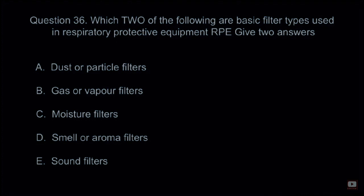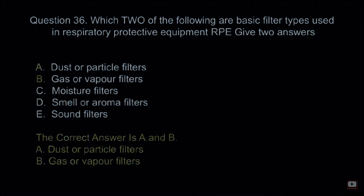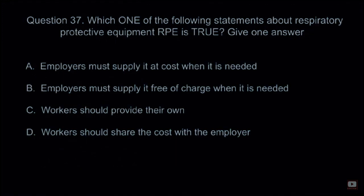Question 36: Which two of the following are basic filter types used in respiratory protective equipment (RPE)? Give two answers. A: Dust or particle filters. B: Gas or vapor filters. C: Moisture filters. D: Smell or aroma filters. E: Sound filters. The correct answers are A and B — dust or particle filters and gas or vapor filters.